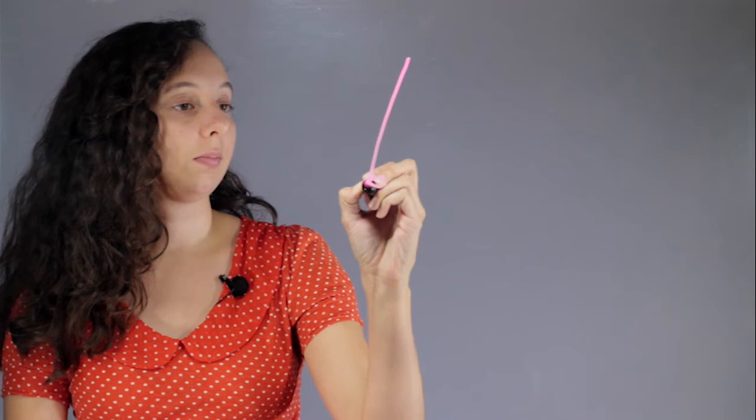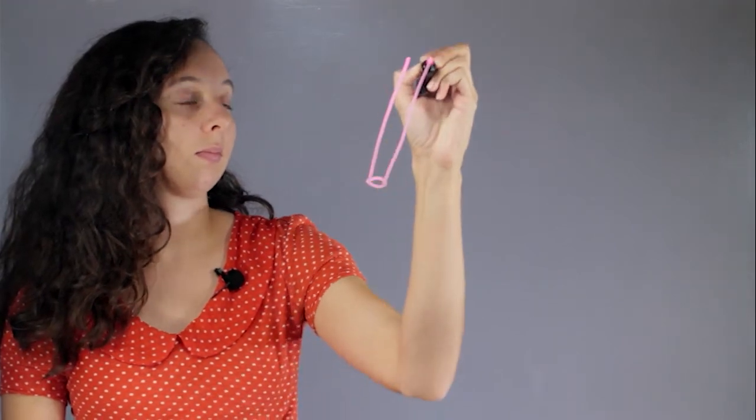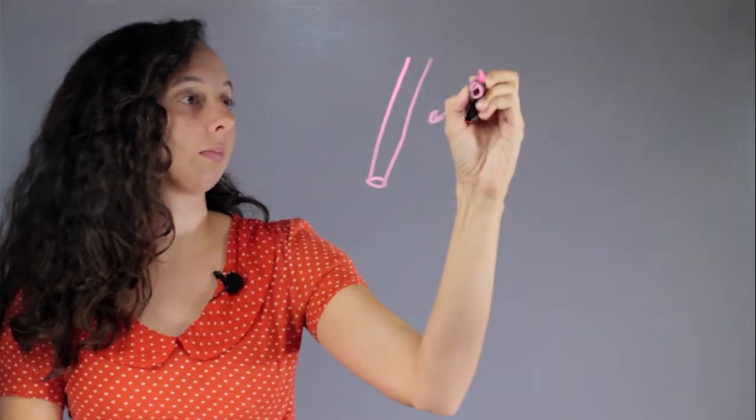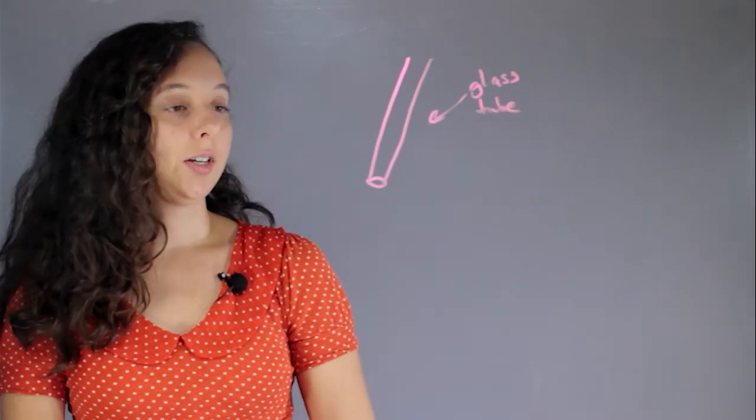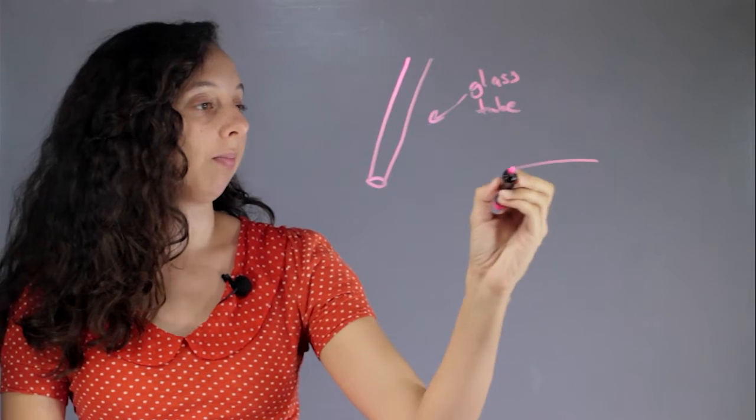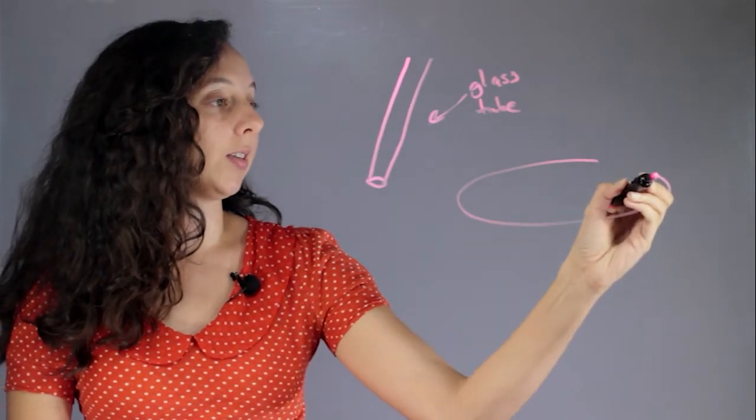So basically, if this is your glass tube, it's so small that a pencil eraser might be like this big.